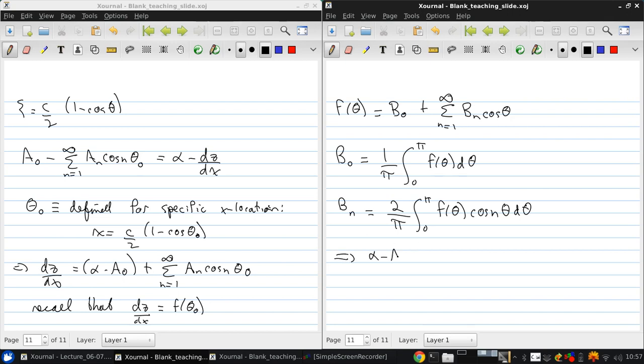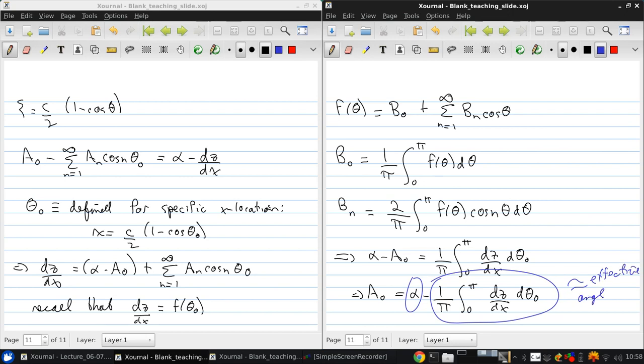So we get that alpha minus a0 is 1 over pi integral 0 to pi dz dx d theta0. So a0 is alpha minus 1 over pi integral 0 to pi dz dx d theta0. This is like the angle of attack minus the average camber angle, so this is like an effective angle of attack.